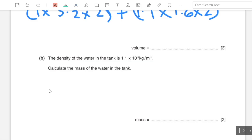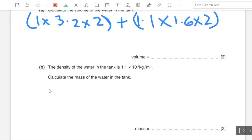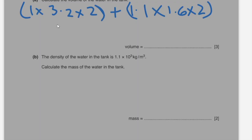Part b: the density of the water in the tank is 1.1 into 10 to the power of 3 kilograms per meter cube. Calculate the mass of the water in the tank. So substituting the formula of density gives the formula of mass as density into volume, which is equal to 1.1 into 10 to the power of 3 multiplied by 9.9. That leaves the answer of mass as 1.1 into 10 to the power of 4 kilograms.